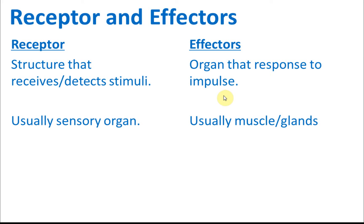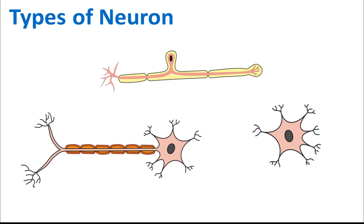Effectors are the organs that respond to impulses. After they receive an impulse, they do something to respond to it. Effectors are usually muscles and glands. So to summarize: receptors receive stimuli and are usually sensory organs, while effectors respond to impulses and are usually muscles and glands.